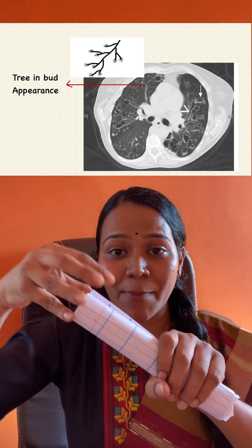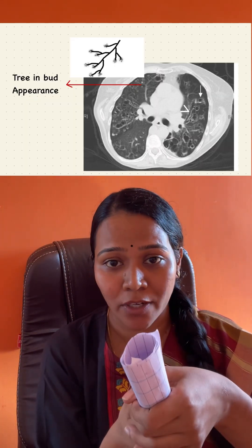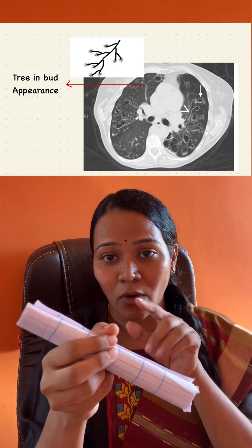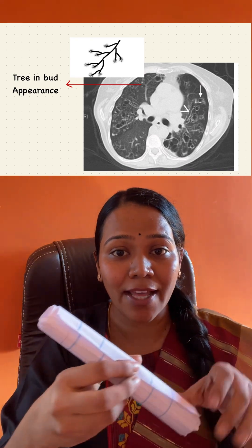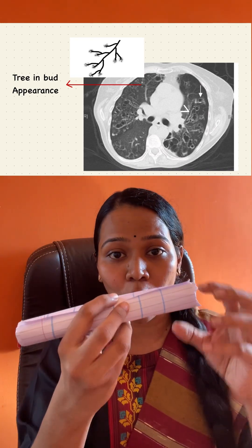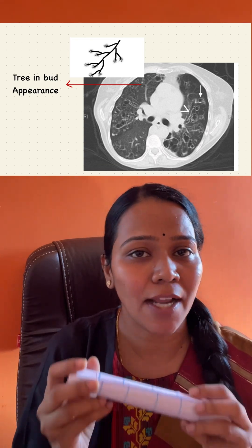The fourth appearance — imagine a lot of stuffing of secretions into the bronchus, and there are multiple bronchi like that. It is going to look like a branch of a tree with a lot of buds. So that is your tree in bud appearance. These are the 4 HRCT findings. Come follow me because I am going to teach you medicine the way you like to learn it.